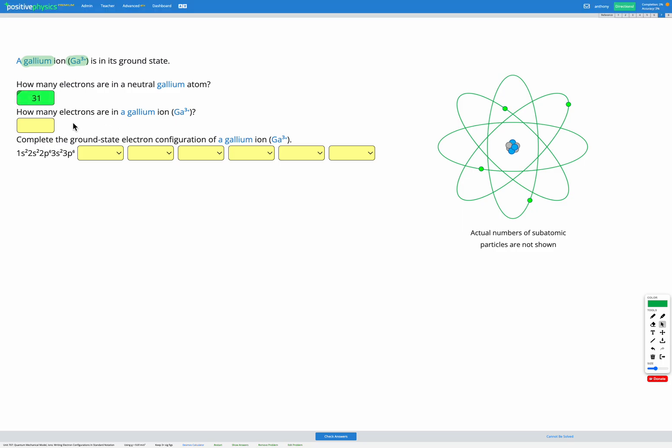Next it asks how many electrons are in a gallium ion, gallium 3 plus. 3+ means it's lost 3 electrons. If it had 31 to start with and it loses 3, it must have 28 because 31 minus 3 is 28. So we've got 28 electrons in a gallium ion.